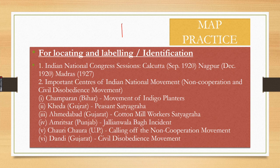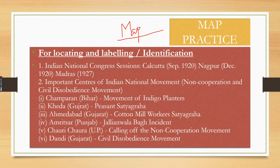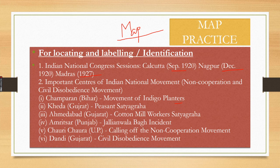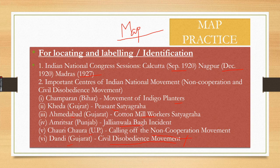Now for the map work. This chapter requires map identification - the maps are already located, and you identify places based on their descriptions. The places include three Indian National Congress session locations: Kolkata (September 1920), Nagpur (December 1920), and Madras (1927). Other important places are: Champaran for the movement of indigo planters, Kheda for peasant Satyagraha, Ahmedabad for cotton mill workers, Amritsar for Jallianwala Bagh, Chauri Chaura for the calling off of the Non-Cooperation Movement, and Dandi for the Civil Disobedience Movement, also called the Salt Satyagraha - the place where Gandhi broke the salt tax.